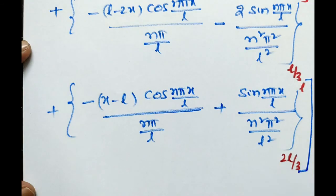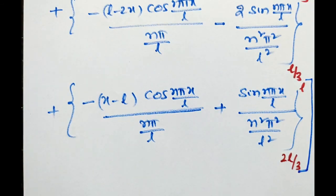Now we have to simplify all the terms by applying the lower limit and upper limit in each term.